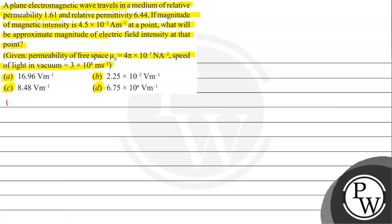To understand this question, we need to understand the concept of speed of light, or to be precise, speed of electromagnetic wave. The speed of light is given by the expression c = 1/√(μ₀ε₀), where μ₀ is the permeability of free space, which is a component related to the magnetic field, and ε₀ is the permittivity of free space, which is the electric field component.